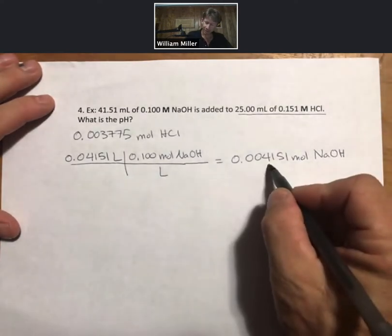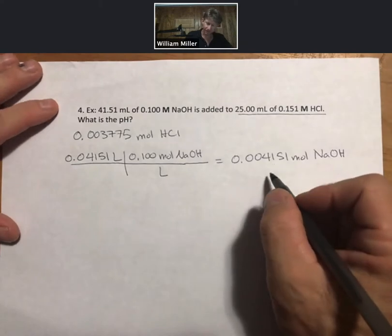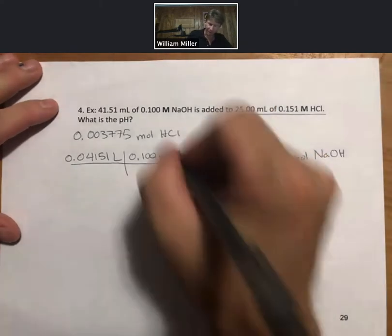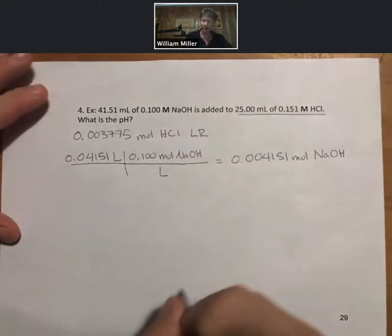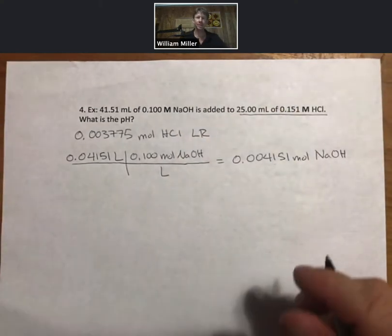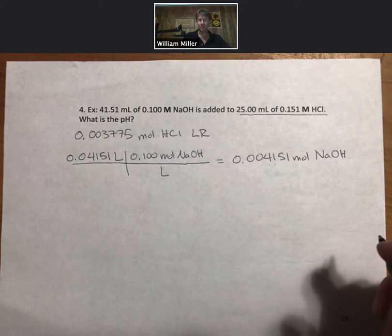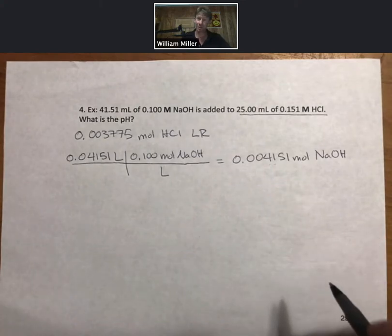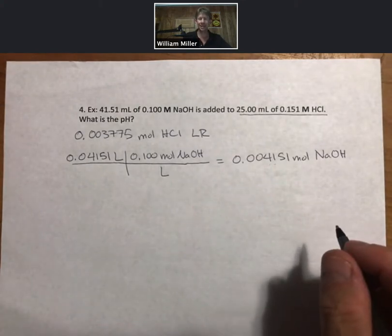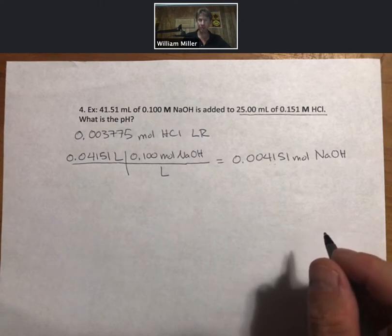Now we can see that the moles of sodium hydroxide are larger. Therefore our limiting reactant will be our hydrochloric acid. And one thing to keep in mind when you work these calculations, if there is excess sodium hydroxide then the pH has to be higher than seven when you get your final answer.